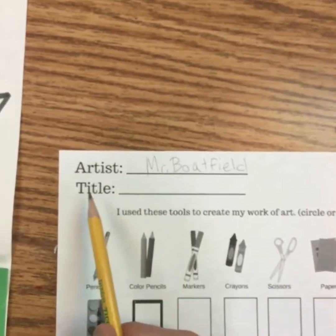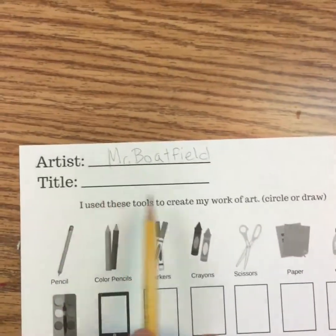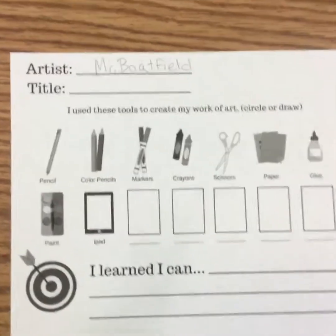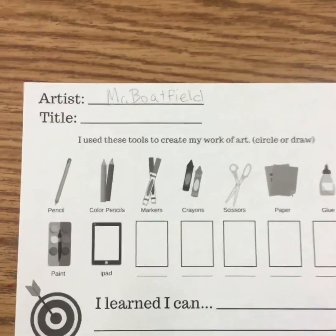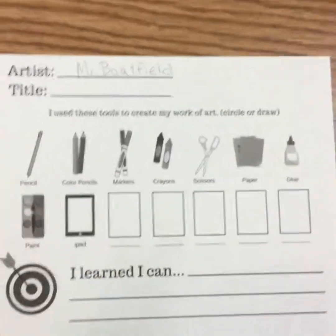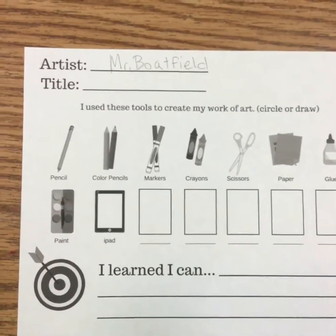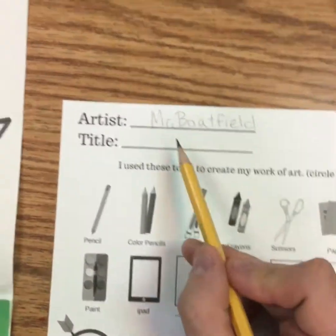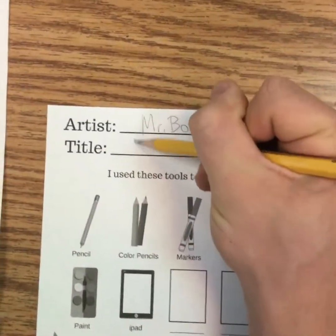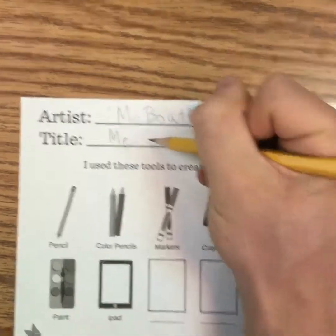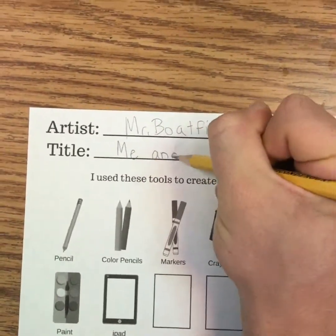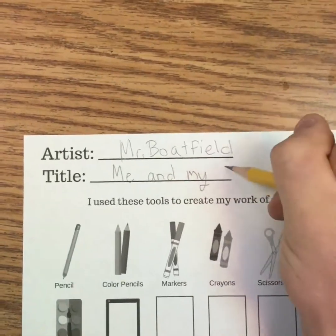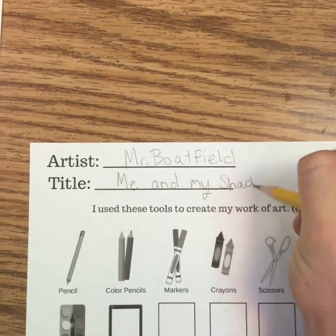The next thing it says is 'title.' You can name your artwork whatever you want. If you're on Mars, maybe it's 'Me on Mars.' Maybe if you put a giant roller coaster in your drawing, you could say 'A Day at the Park.' I'm going to call mine 'Me and My Shadow.' If you want to name yours that, that's fine, but you can also title this whatever you want. Go ahead and give it a title.